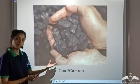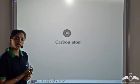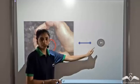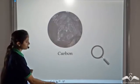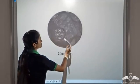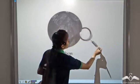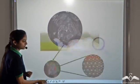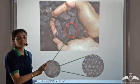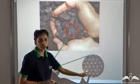You must have seen coal. Coal is also known as carbon. So these are carbon or coal pieces, and this is a carbon atom. Now what is the similarity between one piece of coal and one carbon atom? Let's take a small carbon piece and see what's inside. One small coal or carbon piece is made up of millions and millions of carbon atoms.